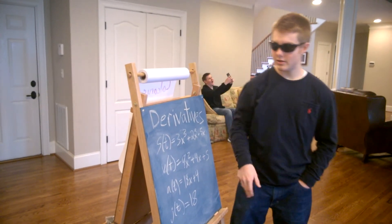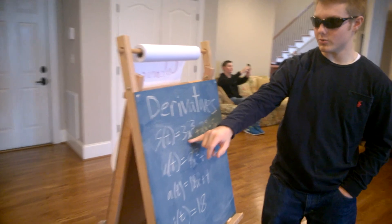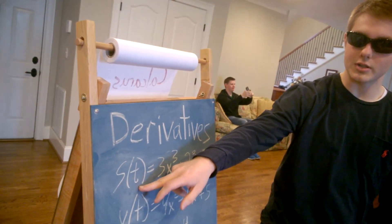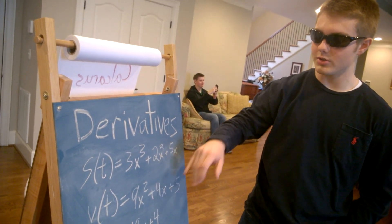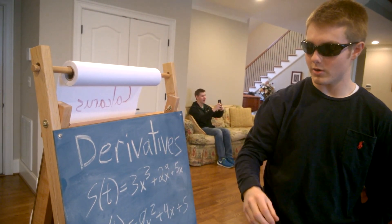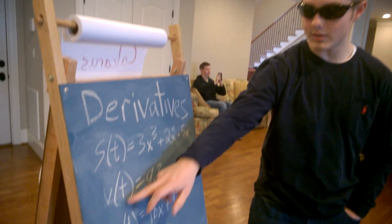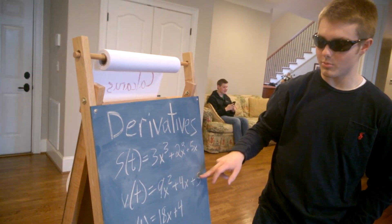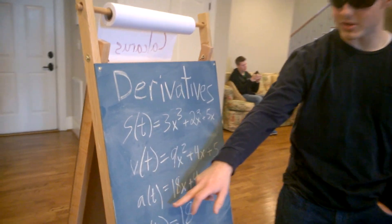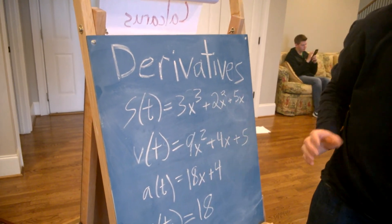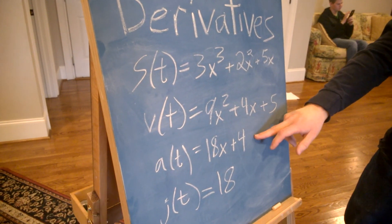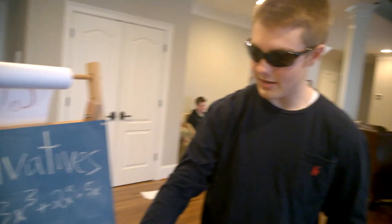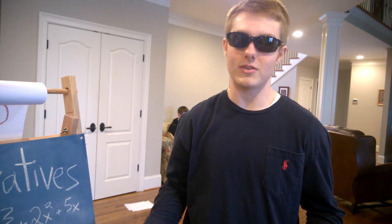This first equation is s of t equals 3x cubed plus 2x squared plus 5x. S of t stands for the position of t, so this graph will tell you the position of, say, a car when it's traveling. V of t is the derivative and gives the velocity at any point. If you take the derivative again, it would be a of t, the acceleration of t, which would be 18x plus 4. The derivative of acceleration is j of t, the jerk of t, which would just be 18. And nobody really knows what jerk means.